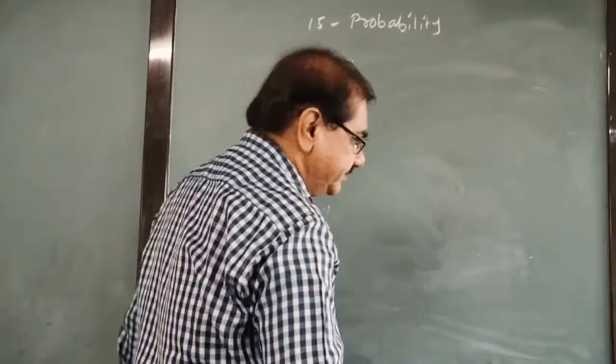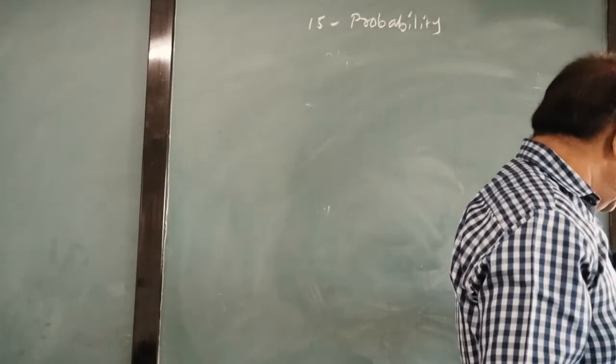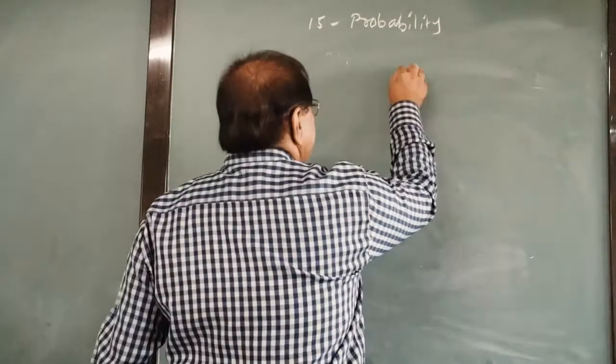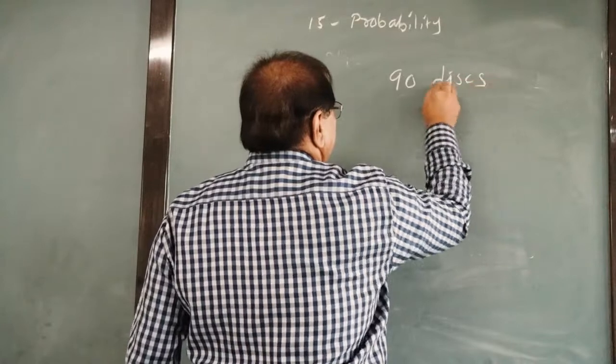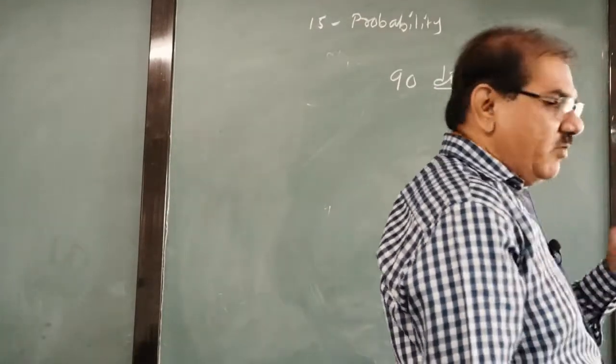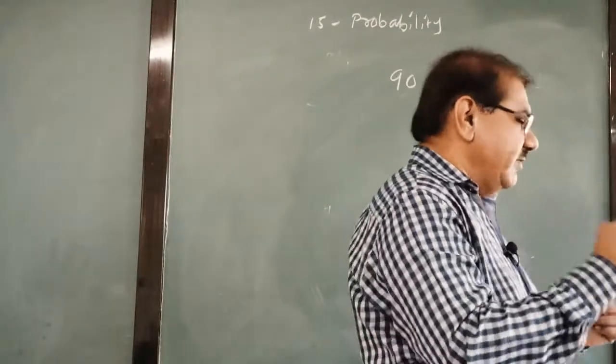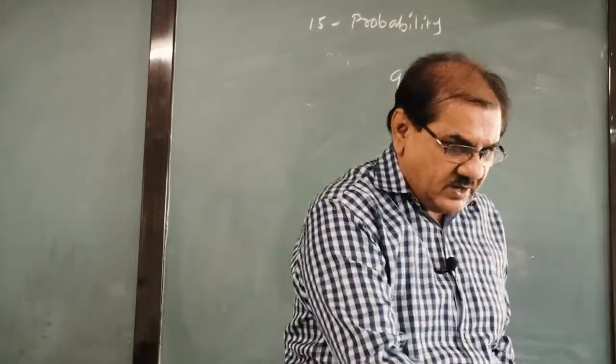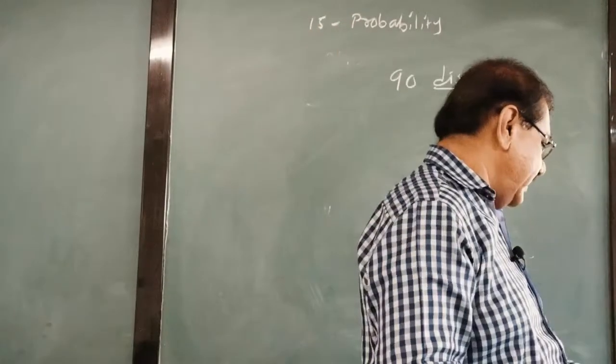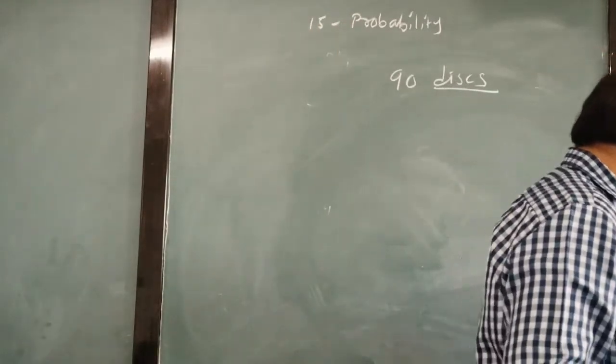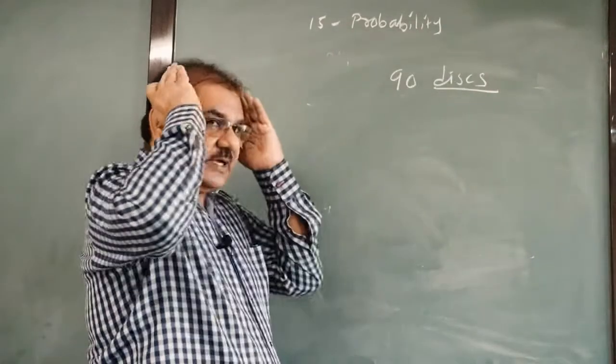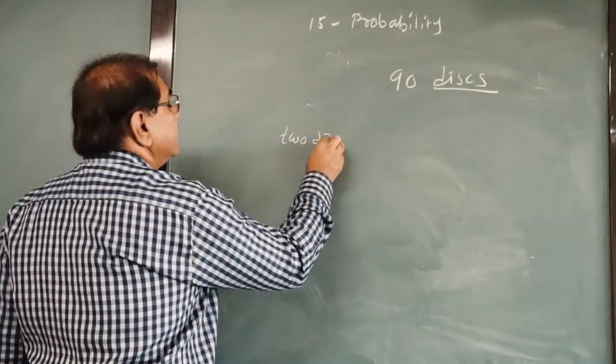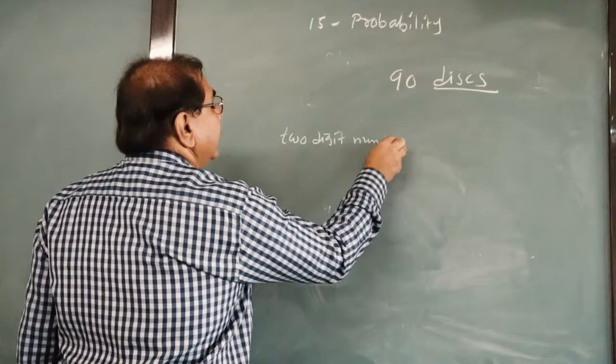We take one more example. We get question number 18. A box contains 90 discs. How many discs are there? 90. They are numbered from 1 to 90. Every plate is given the number 1, 2, 3, 4 up to 90. If one disc is drawn at random from the box, from the box one disc is to be picked up randomly without looking into it. Then find the probability number 1, it is a 2 digit number. Now you have to keep in mind all the numbers 1 to 90.